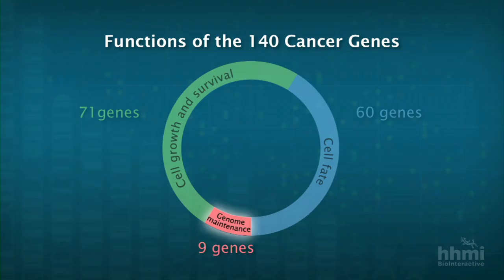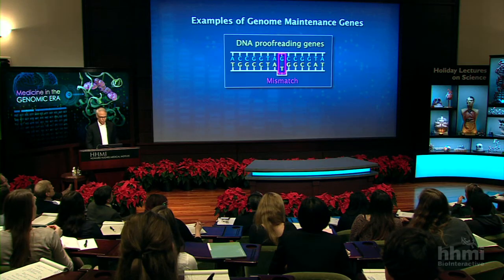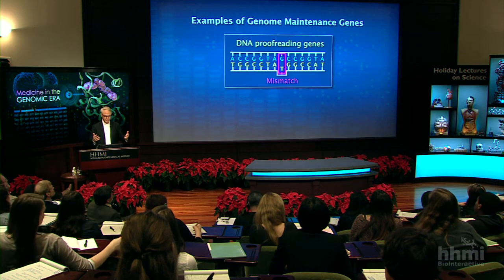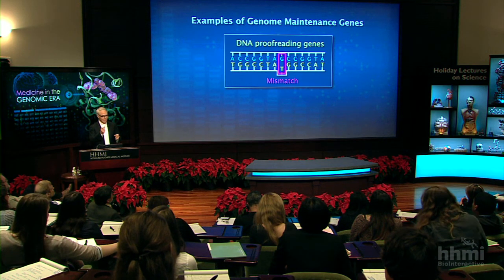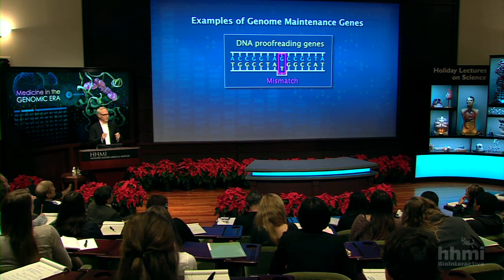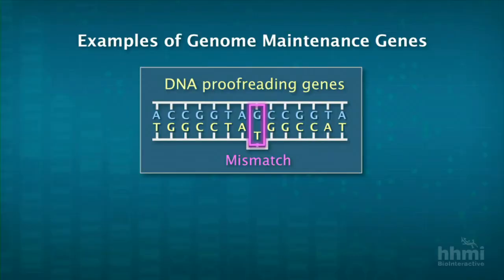When DNA is replicated in a normal cell, DNA polymerase is a really good enzyme, but it's not perfect — mistakes are made. About every billion bases, there's a mistake. To correct the mistakes, we have proofreading enzymes that go back and read the new sequence and fix the errors.